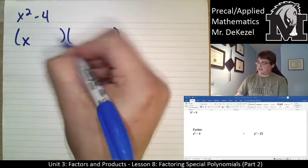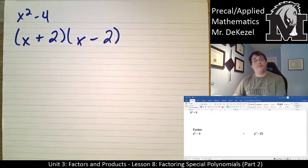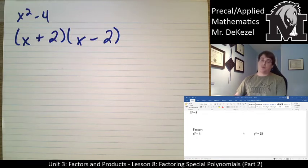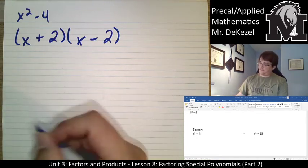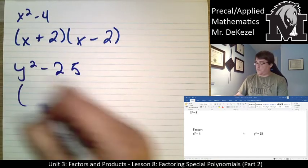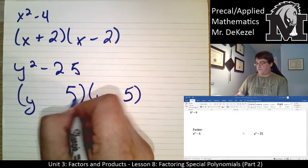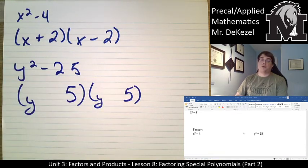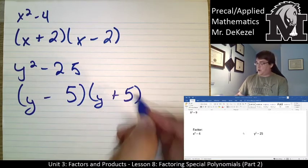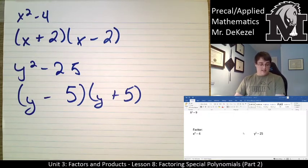x and x make x squared; 2 times 2 gets us 4. We make one positive and one negative. So x squared minus 4 factors as (x+2)(x-2). Let's do the next one: y squared minus 25. We write our brackets, y's go in the front, and 5 times 5 makes 25. To get 0 in the middle, one is positive and the other is negative — easy as that.